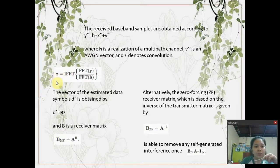Assuming perfect knowledge of the channel impulse response and perfect time and frequency synchronization at the receiver, the cyclic extension can be disregarded. The signal can be equalized in the frequency domain yielding Z equals IFFT multiplied by FFTY over FFTH. The vector of estimated data symbols D is obtained by the factor of BC where B is a receiver matrix. B sub MF equals A raised to H.